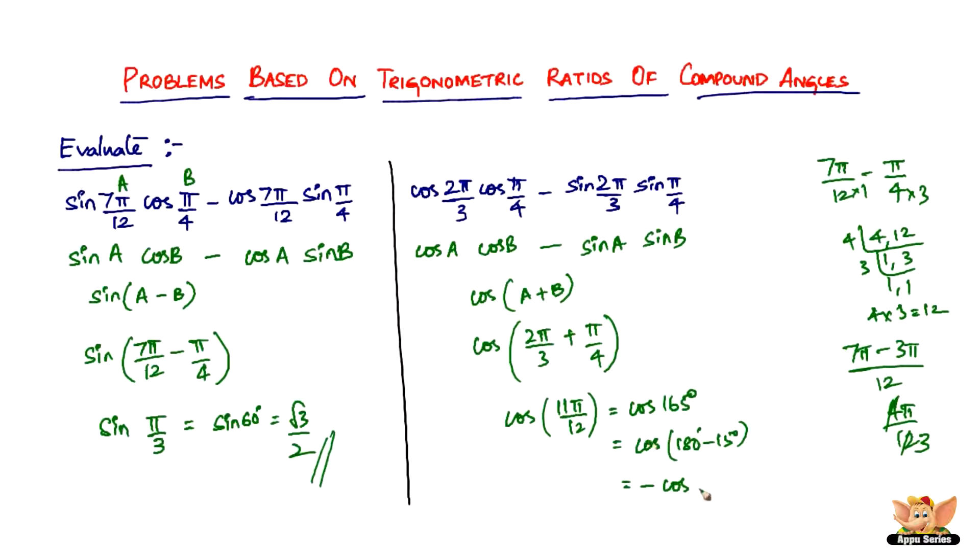Since it's 180, it's not going to change. So it's going to be minus cos 15 degrees. So cos 15 is what? Root 3 plus 1 divided by 2 root 2. If it is minus cos 15, it's going to be minus of root 3 plus 1 divided by 2 root 2. So that is what this answer is equal to.